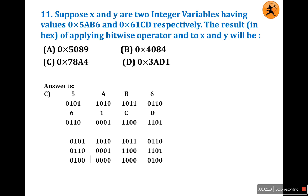If both bits are 1, the answer is 1; otherwise it is 0. Going through each bit pair: 0 AND 1 = 0, 1 AND 0 = 0, 1 AND 1 = 1, 0 AND 1 = 0, and so on. Converting the result back to hexadecimal: 0100 = 4, 1000 = 8, 0000 = 0, 0100 = 4. So the total answer is 0x4084. Answer is B.